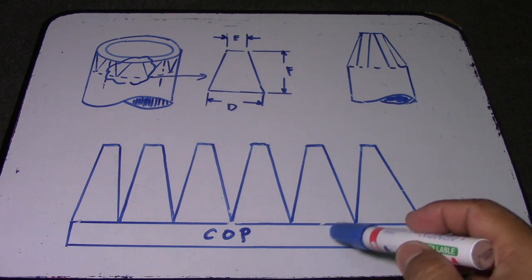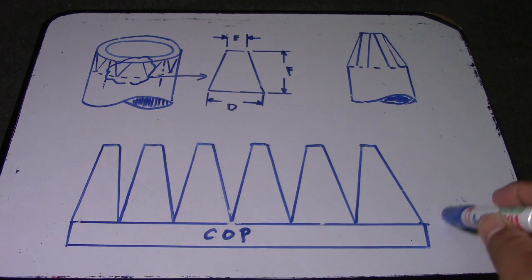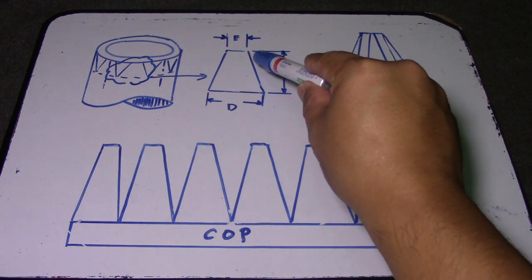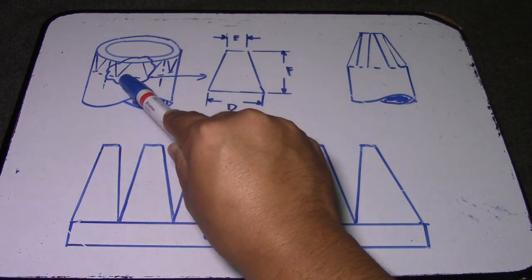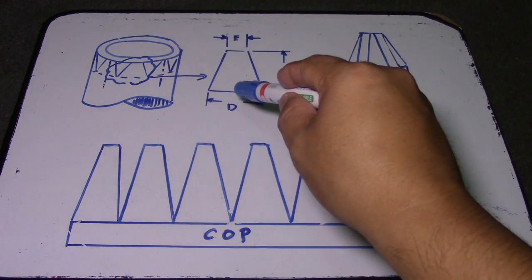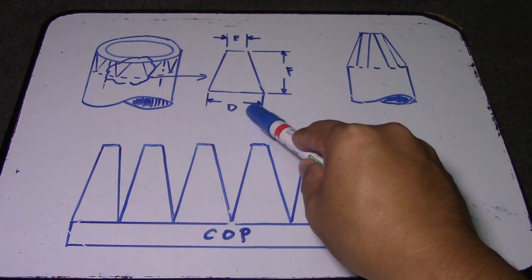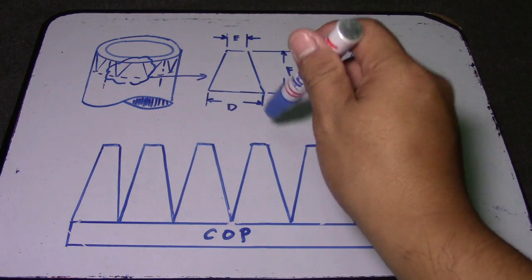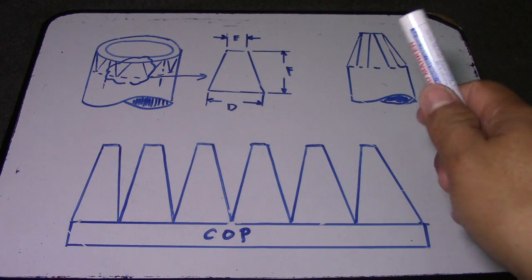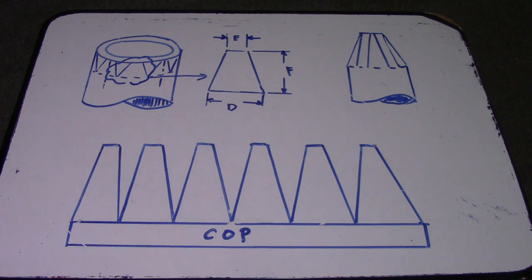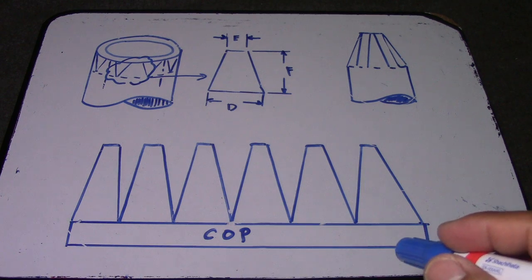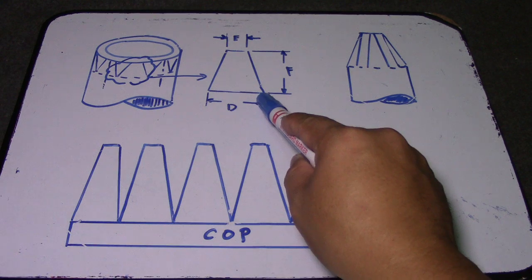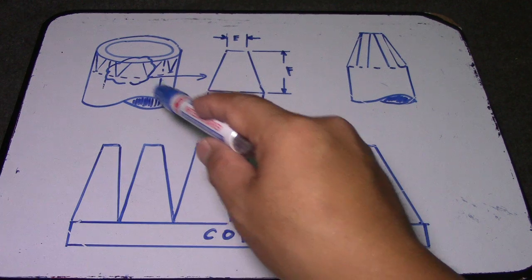We also have a template for the concentric reducer. First, how to compute this triangle from this pipe. To get letter D, take note of this formula: D is the circumference of the large pipe divided by the number of arms. We have a minimum of four arms.